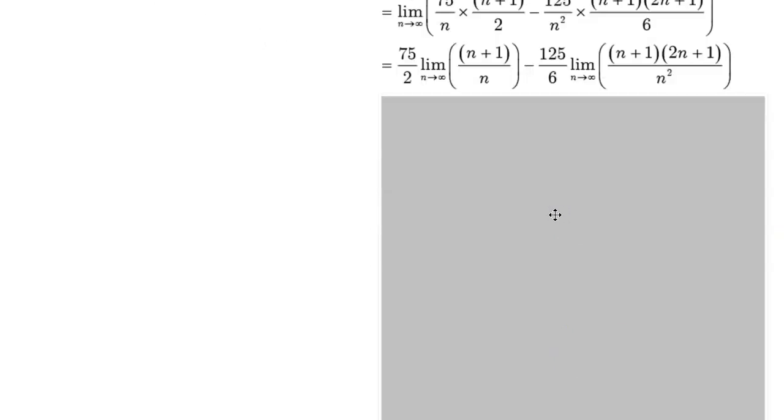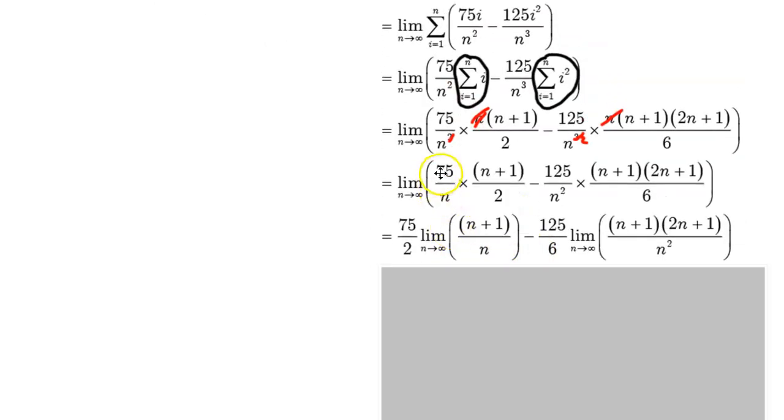In the next step, I pull out the constant 75 over 2. There's no n's involved, so we don't have to worry about it. If you're figuring out the limit where n is involved, you need to make sure that you're still focusing on n, but anything else that doesn't have n in it, you can pull out. So that leaves me with the limit as n approaches infinity of (n+1) over n. Similarly, with the second term, I can pull out the 125 and the 6, and that leaves me with the limit of (n+1) times (2n+1) over n squared.